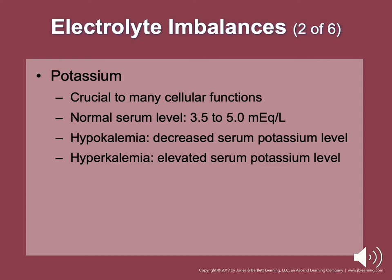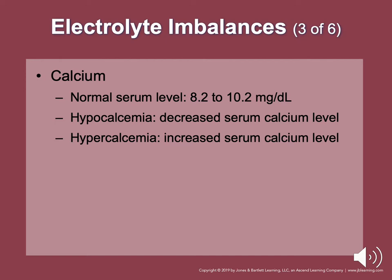Another imbalance involves calcium. Normal calcium level is 8.2 to 10.2 milligrams per deciliter. Hypocalcemia could be caused by decreased calcium intake, increased calcium loss, endocrine disorders, and sepsis. Hypercalcemia could be caused by increased calcium intake, endocrine disorders, or neoplasm.